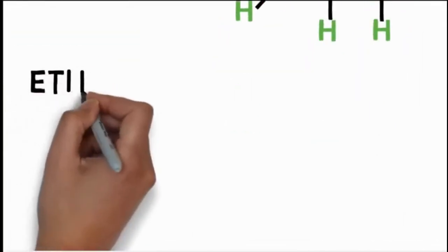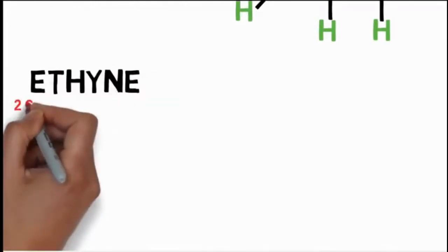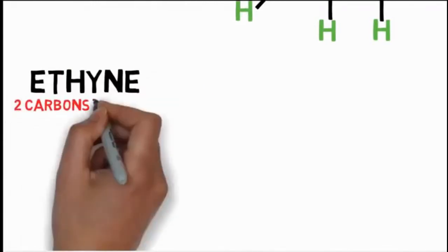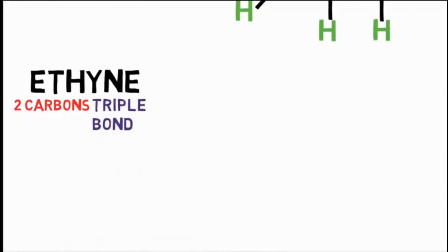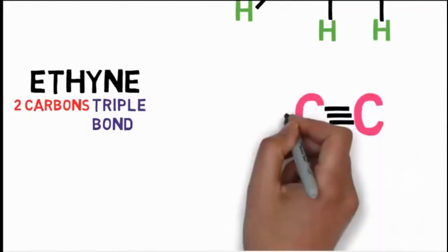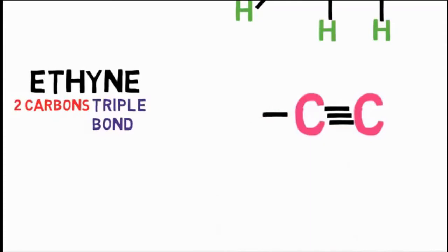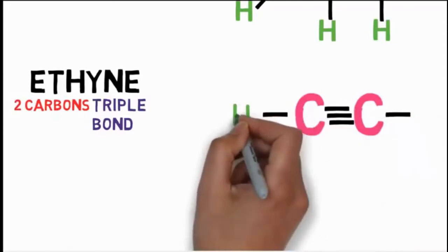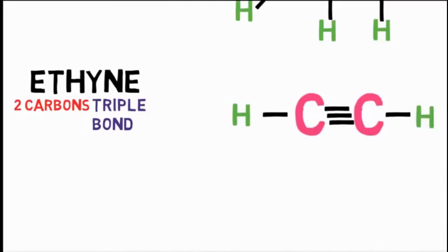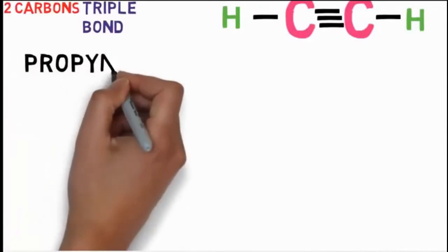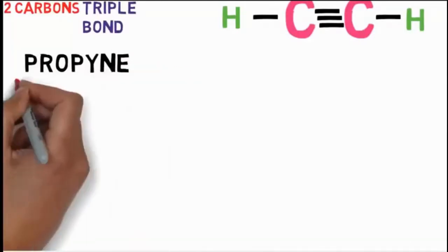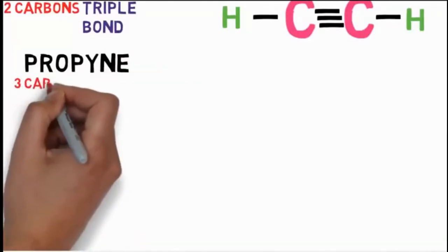Ethyne: it has prefix 'eth' meaning two carbons, and 'yne' meaning carbon-carbon triple bond. Insert a triple bond between the carbon pair. Each carbon already has three bonds and one remains. Add hydrogen to each bond. This is our ethyne ready.